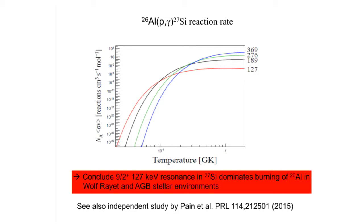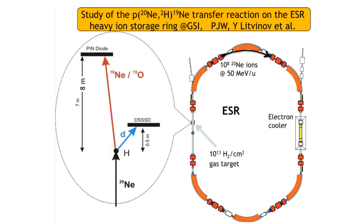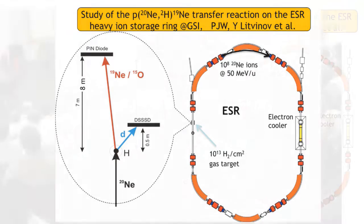I now want to tell you about an experiment we did about two years ago on the heavy-ion storage ring at GSI, studying reactions. One of the advantages is you can use pure hydrogen targets and repeatedly recirculate the beam. The beam has a frequency of rotation within the ring of about a megahertz, so you can compensate for the thinness of the target by the frequency of rotation.